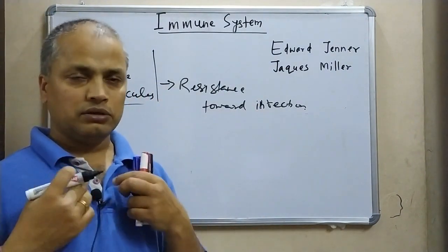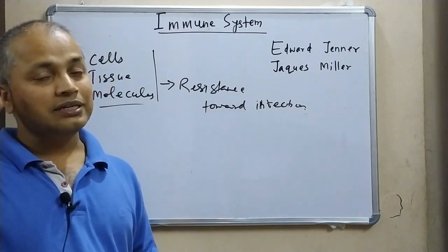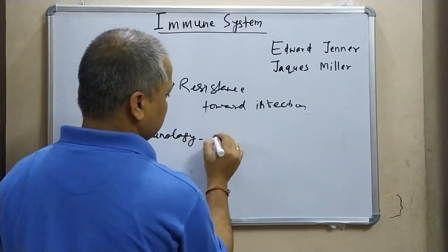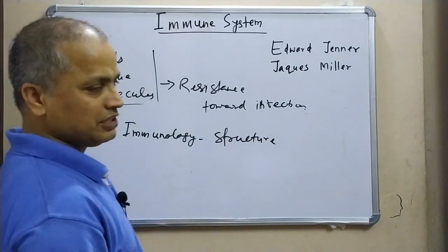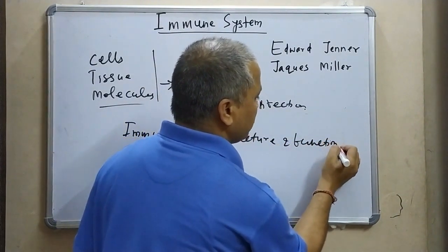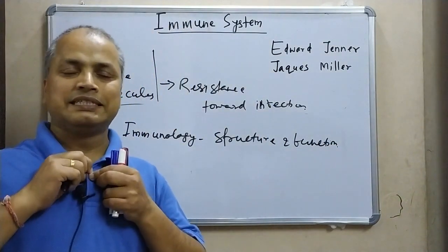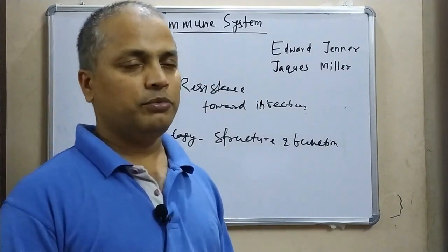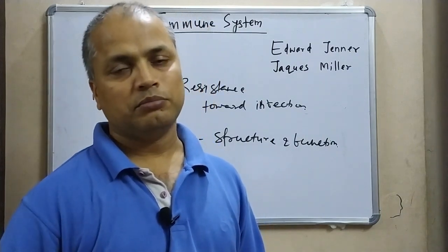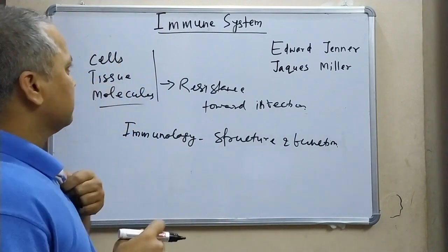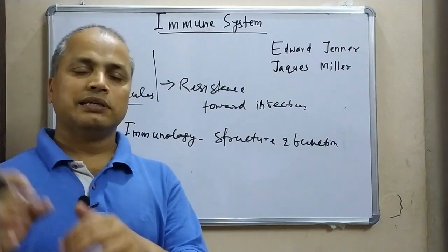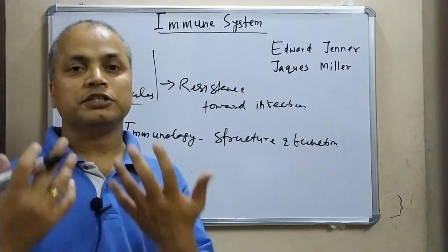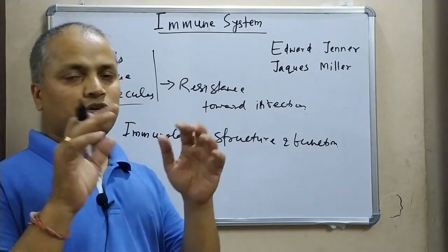Immunology is the study of the structure, components, and functions of the immune system — the structure of those organs, cells, and tissues. Immunity is the resistance of the host to particular pathogens. Whenever we have any kind of infection, the body has a specific kind of response — it reacts to those components. This is a kind of defense system. Whenever a foreign particle or unknown substance comes into your body, the body does not easily accept it and has a response against it. That is called the immunological response.